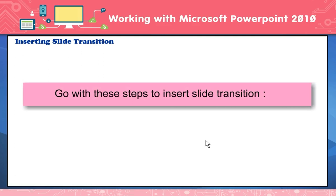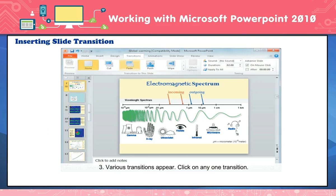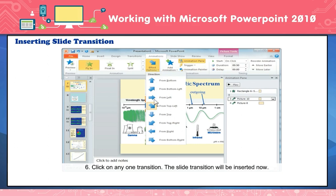To insert a slide transition: click on the slide you want to add a transition to. Click on the Transitions tab. Various transitions appear. Click on any one transition. An animation icon appears near the slide in the slide pane. Click on the down arrow of Effect Options and click on any one option. The slide transition will be inserted.